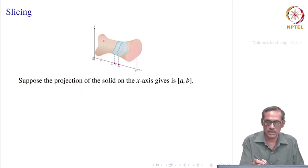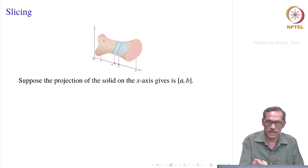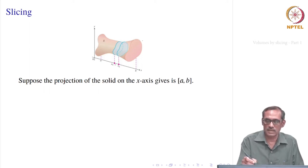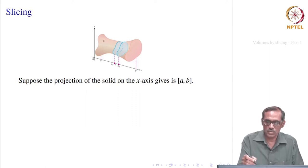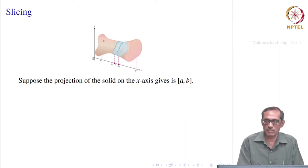Let us consider a solid whose projections on the x-axis give us the points x equal to a and x equal to b. Within these two planes — x equal to a is a plane in 3D, perpendicular to the x-axis, that is, parallel to the yz-plane, and x equal to b is similarly another parallel plane to the yz-plane — the volume lies between these two perpendicular planes. By projecting this solid, we get the left endpoint a and the right endpoint b.